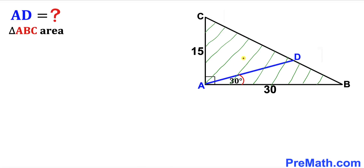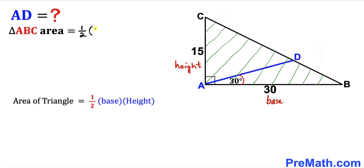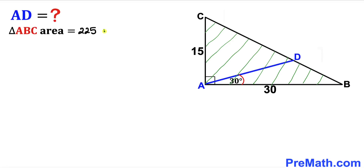Let's go ahead and calculate the area of this right triangle ABC. Recalling the area of a triangle formula: area equals one half times base times height. In our case, the base is 30 and the height is 15 units. Therefore, the area of triangle ABC is one half times 30 times 15, which gives us 225 square units.